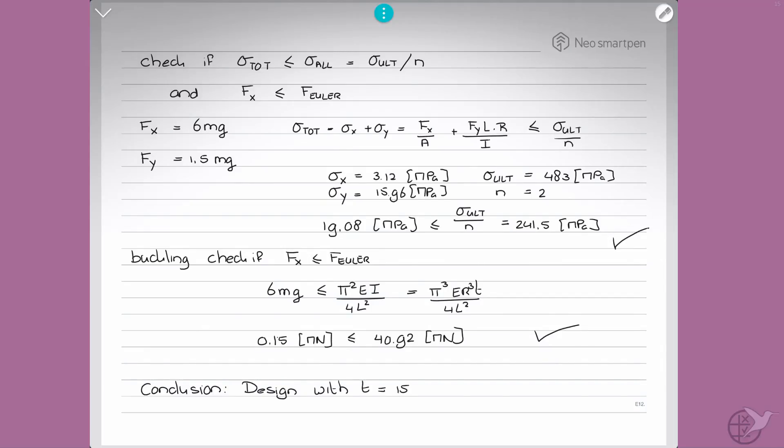So that means that both requirements are met. So we can draw a conclusion and design with T equals 15 mm meets all requirements. And that is how you size a spacecraft.